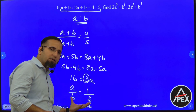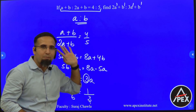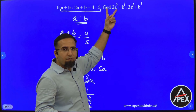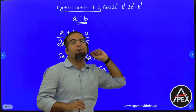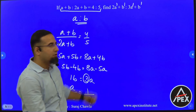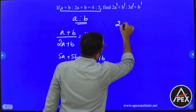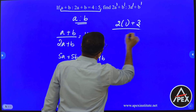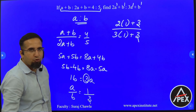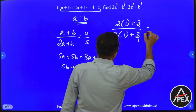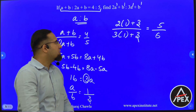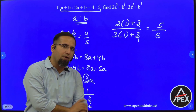Now A is to B is 1 is to 3, and the question asks for 2A plus B is to 3A plus B. Taking A as K and B as 3K, both numerator and denominator are in the form of K, so K cancels. We can directly replace: 2 into 1 plus 3 divided by 3 into 1 plus 3 gives 2 plus 3 in the numerator and 3 plus 3 in the denominator, which is 5 divided by 6. So the required ratio is 5 is to 6.